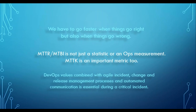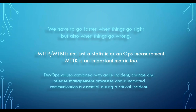If we couple DevOps values — collaboration, communication, integration, automation — with more agile incident, change, and release management processes that have more adaptability built in, and then add the extra ingredient of automated communication, critical incidents will be restored and resolved faster. All of these metrics — MTTI, MTTK — will start to have really significant meaning because the processes will be adapted to be more agile, the values of DevOps will be embedded, and automation won't be limited just to continuous delivery. Automation can be leveraged on communication platforms as well.